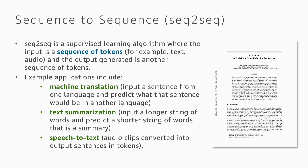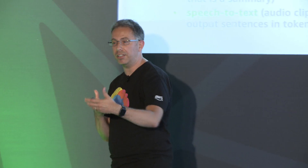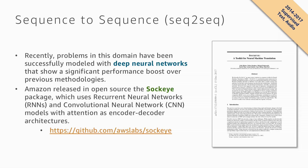Another problem applicable to time series is sequence-to-sequence learning — transforming one sequence into another. Common applications include machine translation (English to German), text summarization (sending a long text and receiving a summary), and speech to text. Platforms like Amazon Alexa use this: an audio file is an ordered list of numbers, and the algorithm extracts the text from it.